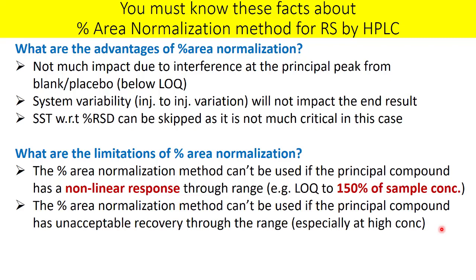Second, percent area normalization cannot be used if the principal compound has unacceptable recovery, especially at higher concentration. Normally, recovery is evaluated only for impurities, but when using percent area normalization you must also confirm the percent recovery of the API at its test concentration of 400 ppm, or up to 600 ppm (150% of test concentration). If acceptable recovery is not achieved at that level, you cannot use this method.